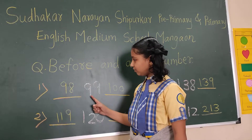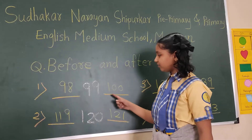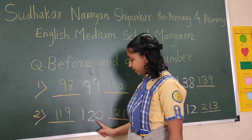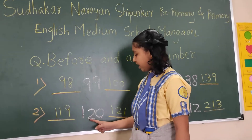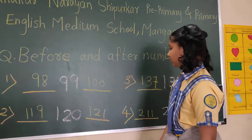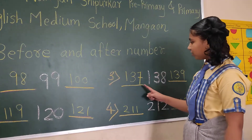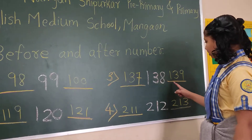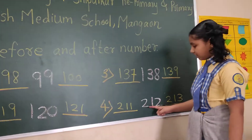99: before number is 98 and after number is 100. 120: before number is 119 and after number is 121. 138: before number is 137 and after number is 139.